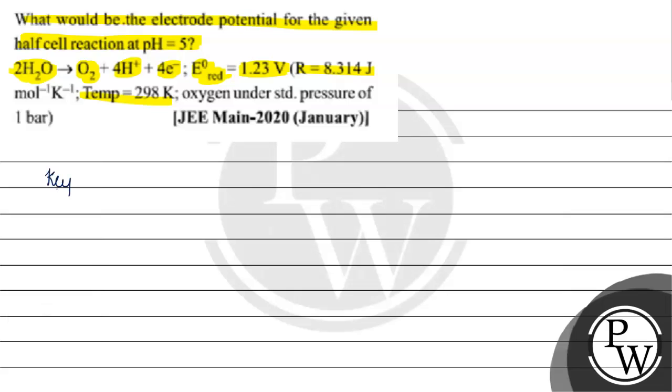Now the key concept for this question is the Nernst equation. The Nernst equation will be E cell equals E0 cell minus 0.0591 by N log base 10 concentration of products by concentration of reactants.